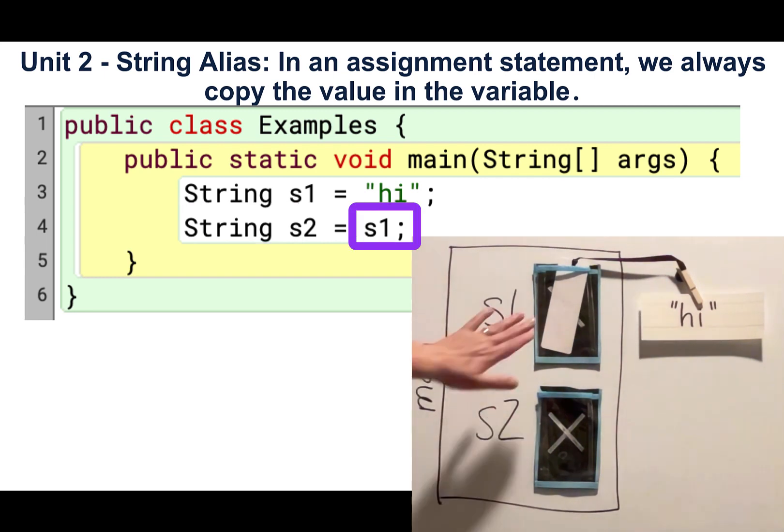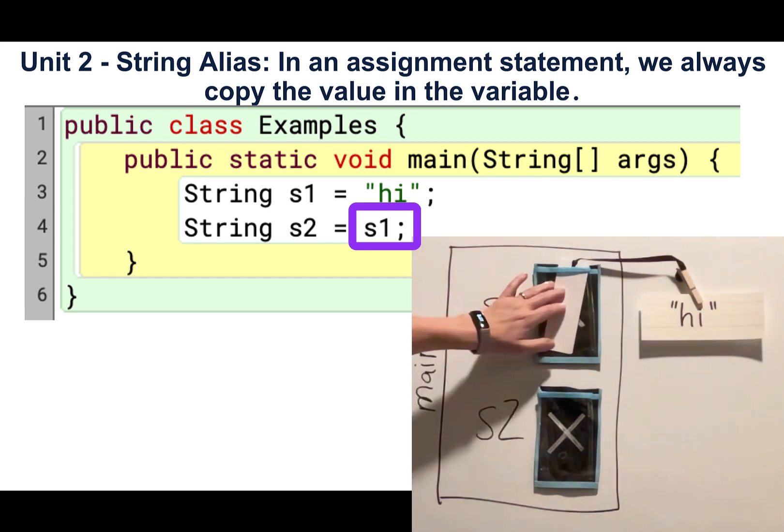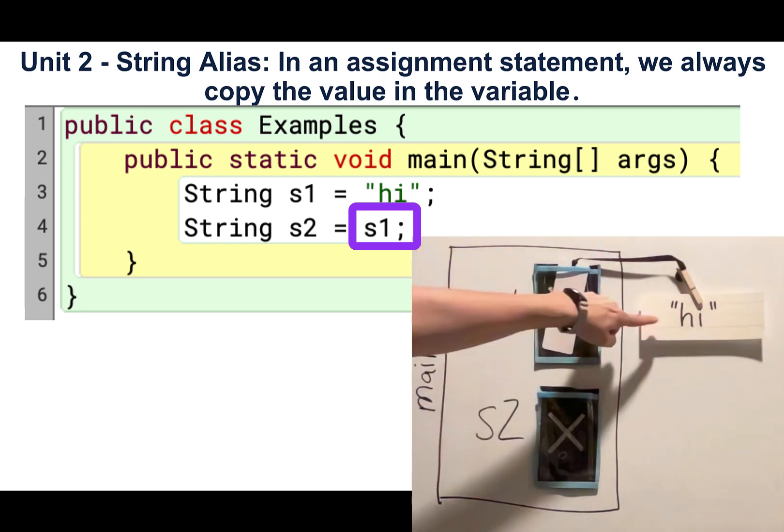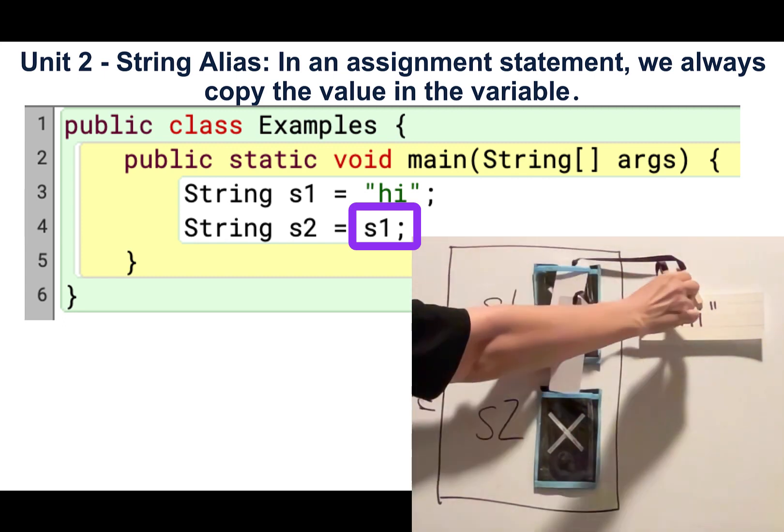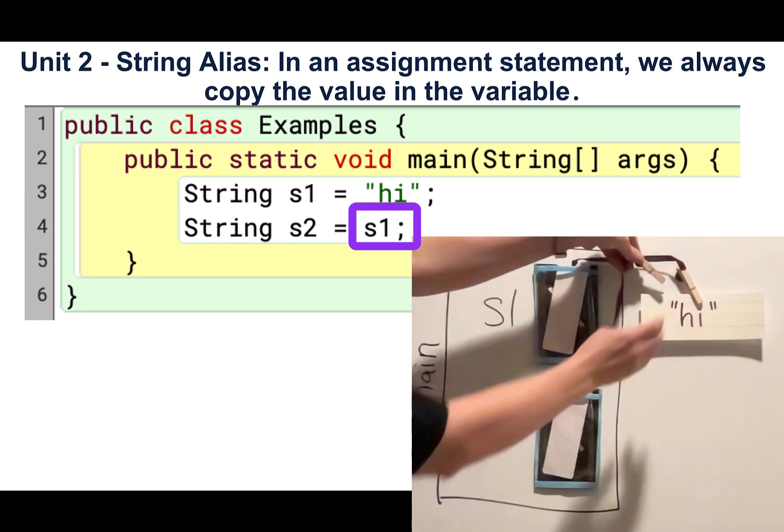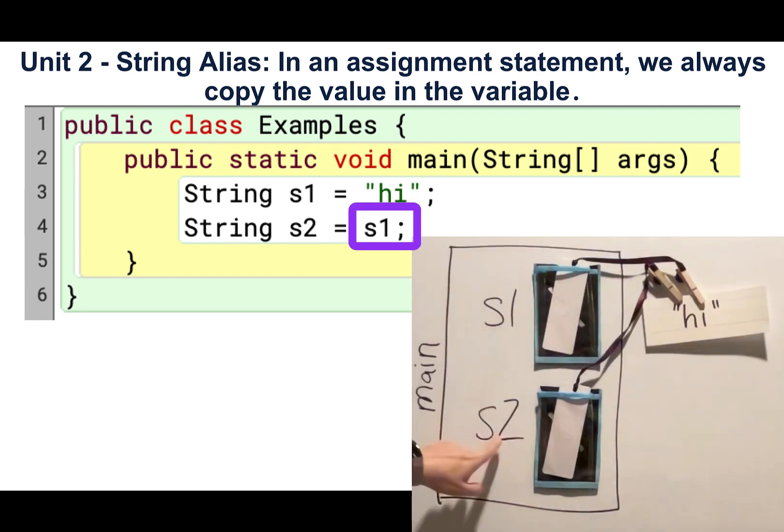I assign it a copy of the value of s1. Since s1 is a variable that references the string hi, I create a copy of that reference. Here's my copy. And then s2 gets set to a copy of that reference. So s2 also references that string object hi.